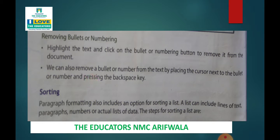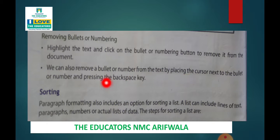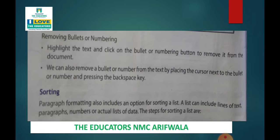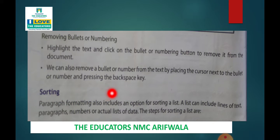We can also remove a bullet or number from the text by placing the cursor next to it. Hame isko kis tarah se remove karenge? For example, humarhe paas word hai highlight. Hame isme se bullet ya number remove karna chahathe hai, tho hum highlight ke start pey cursor set karenge, then hum backspace key press karenge, tho bullet ya number remove ho jayega.